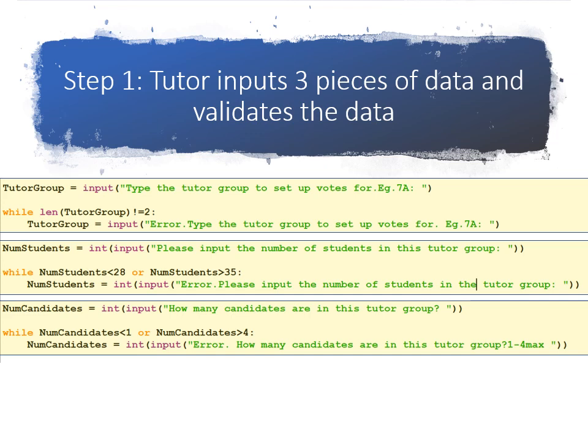The second piece of input is the number of students in the class. So number of students is equal to input. And we validate that according to a range check because the description said that classes should be between 28 students and 35 students. So while the number of students is less than 28 or it's greater than 35, that's an error.